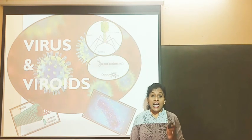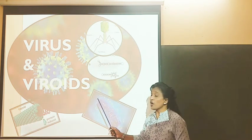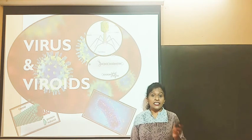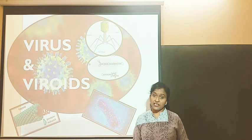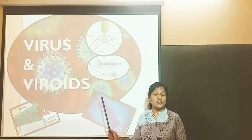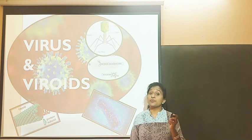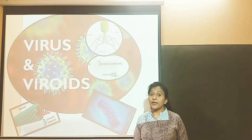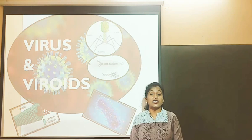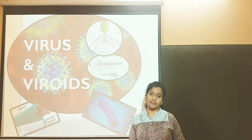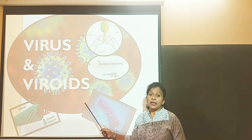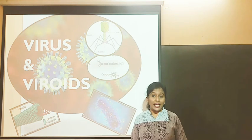We had seen that R.H. Whittaker did not place the virus or viroids in his five kingdom classification, because the characteristics of these organisms don't resemble those of the other organisms placed in the five kingdom classification. So today we will also discuss about virus and viroids.